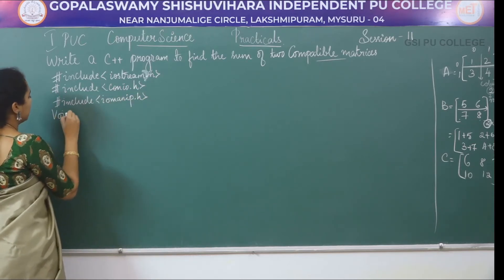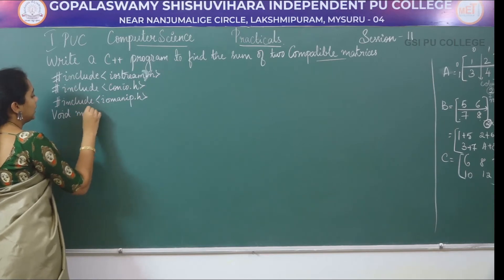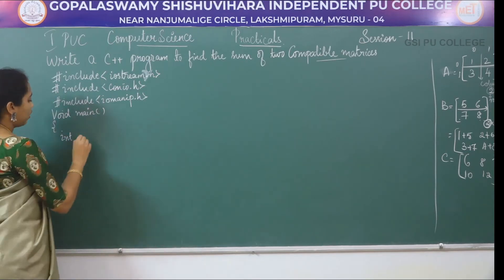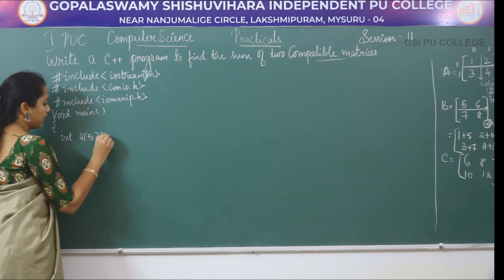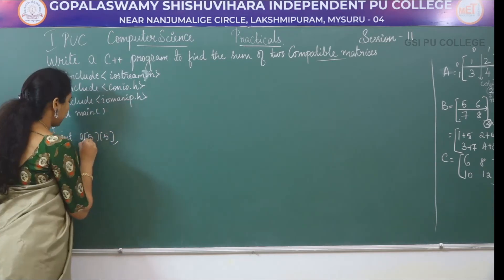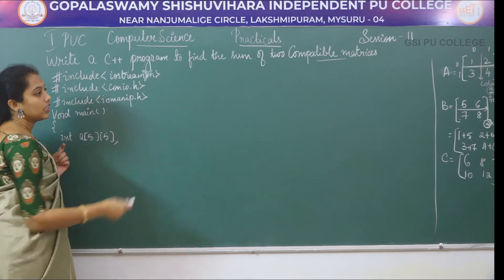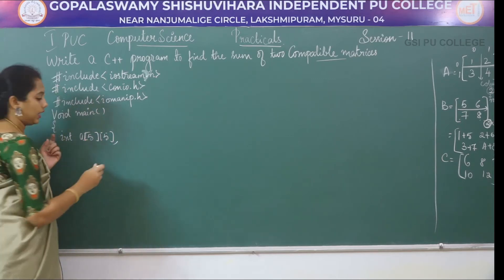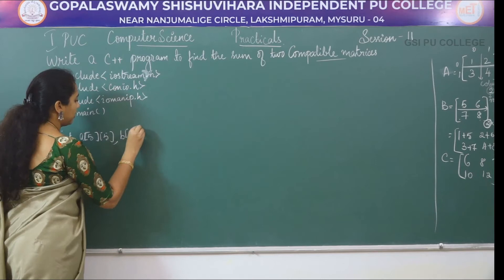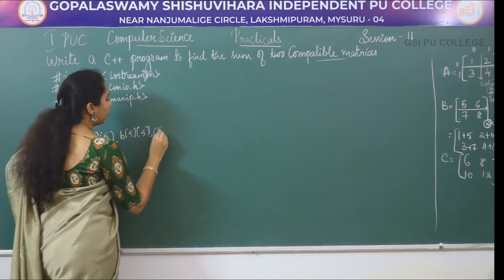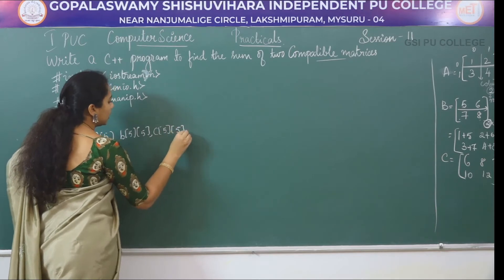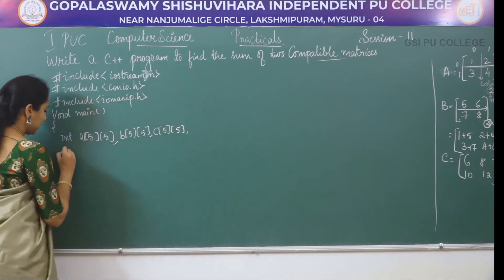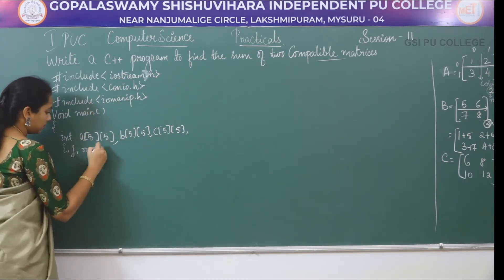Next is the main function. In the main function we declare the required variables: int A[5][5] — a 2-dimensional array — B[5][5], and C[5][5] to store the contents of the two matrices and their sum. We also declare variables i, j, m, and n.